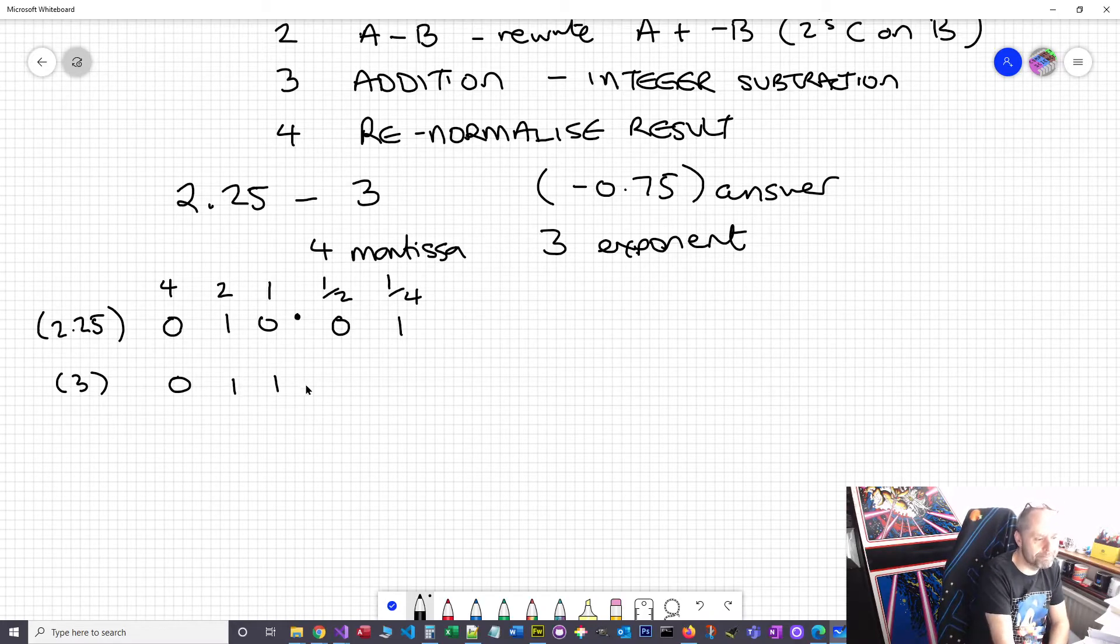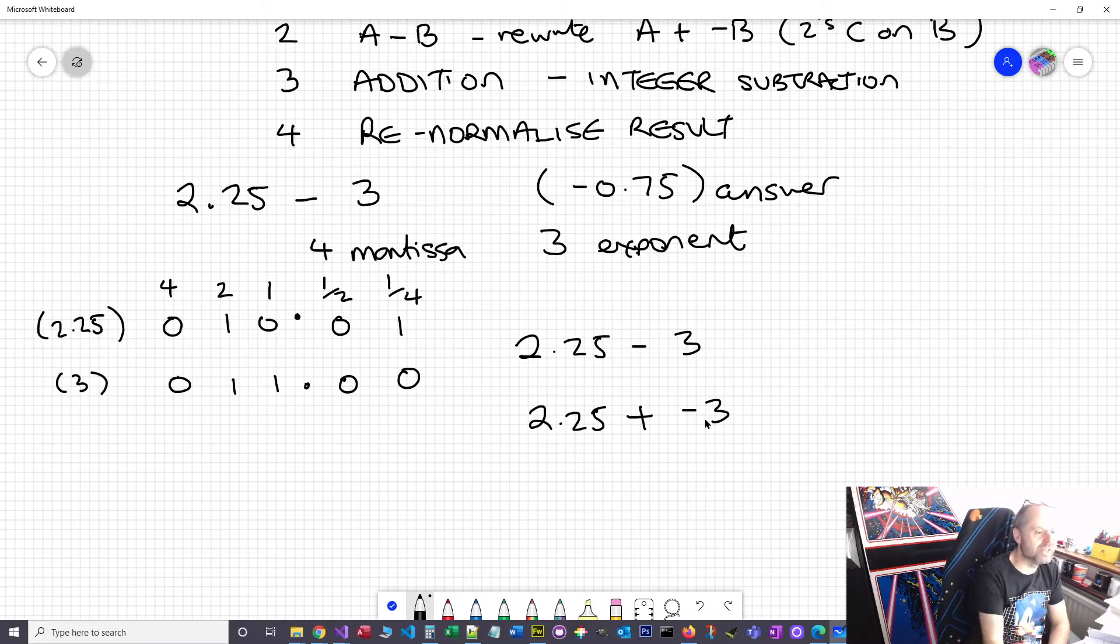They're currently unnormalized. Actually, I've got two unnormalized numbers, so I don't have to do the unnormalized step. I've currently got 2.25 and I can do minus three, but I'm going to rework this - I want this to be 2.25 plus minus three. So in order to do the minus three, I need to two's complement this.